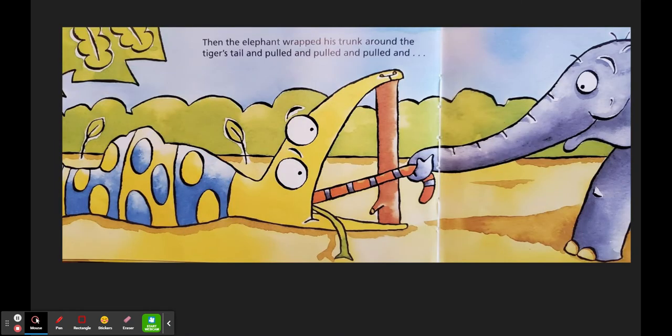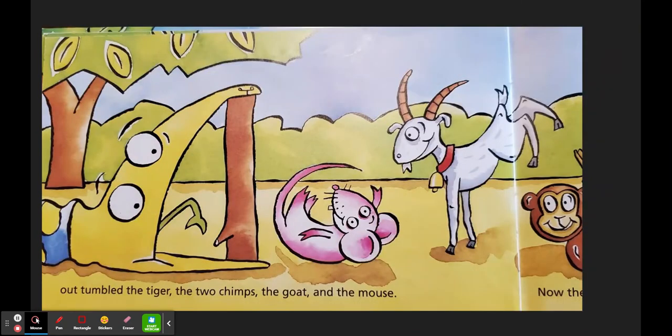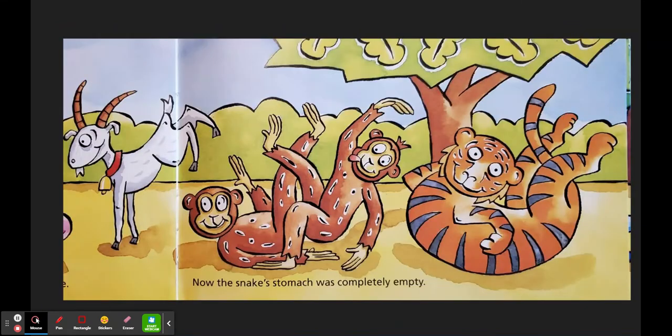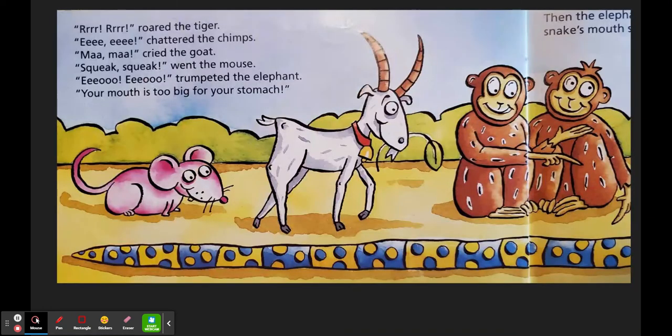Then the elephant wrapped his trunk around the tiger's tail. And he pulled and he pulled and pulled and out tumbled the tiger, the two chimps, the goat, and the mouse. Now the snake's stomach was completely empty. Look how skinny he is.